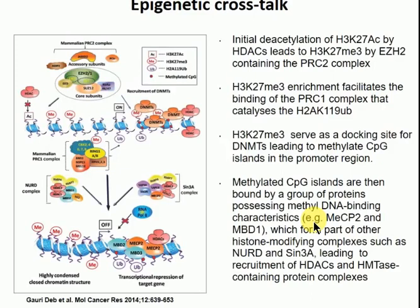Before we read the histone code, what does acetylation do to charge? If you've got DNA wrapped around histones — positive and negative — and you start adding acetyl groups to the histone tail, it neutralizes the charge. If you neutralize the positive charge on histones, the interaction between DNA and histone weakens, loosening the structure and leading to gene expression. So these modifications play around with charges and can loosen the histone from the DNA.